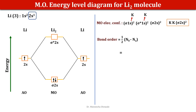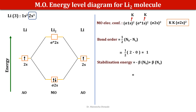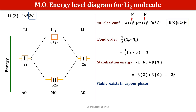The bond order is half into (Nb minus Na) = half into (2 minus 0) = 1, showing there is one bond between the two lithium atoms. The stabilisation energy is minus beta into 2 plus beta into 0, which is minus 2 beta. So the molecule will be stable and it is observed to exist in the vapor phase. As there is no unpaired electron, the molecule will be diamagnetic.